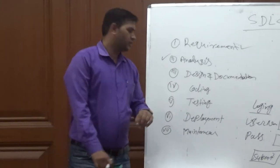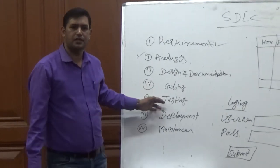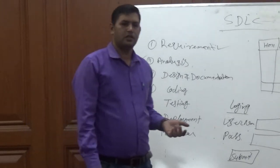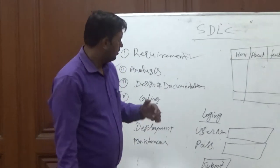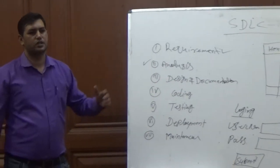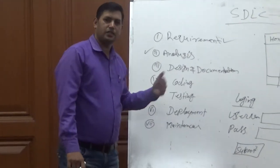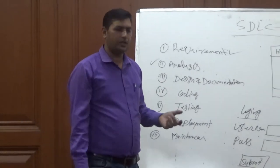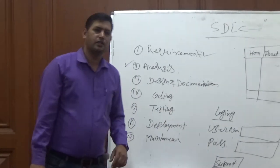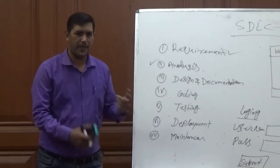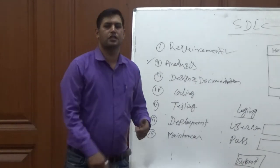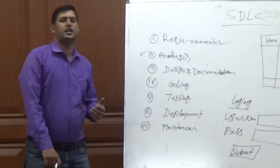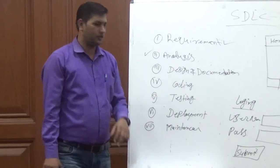After finalizing the project, it is handed to the testing department. The testing department starts testing in different phases: the first phase is unit testing done by the developer, then integration testing done by the software tester, then system acceptance testing, and finally user acceptance testing.